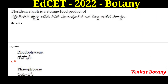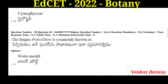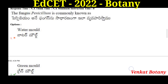Floridian starch is a storage food product of Rhodophyta (red algae). The right option is Rhodophyta — the stored food material is in the form of Floridian starch. The fungus Penicillium is commonly known as green mold.